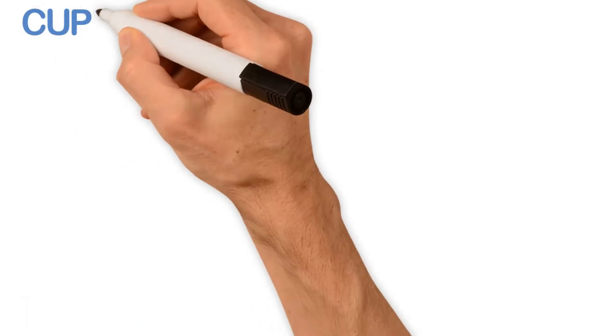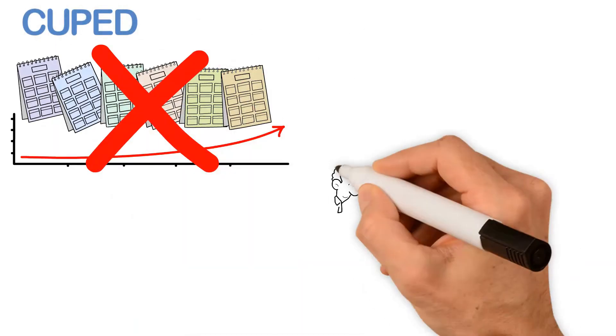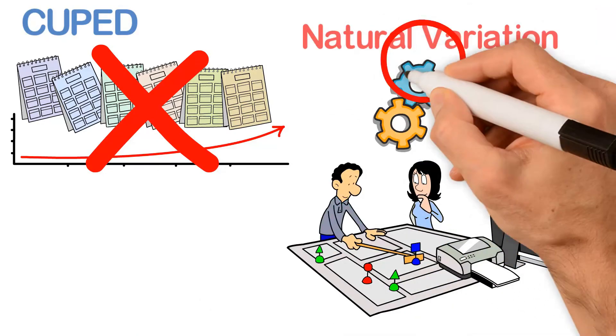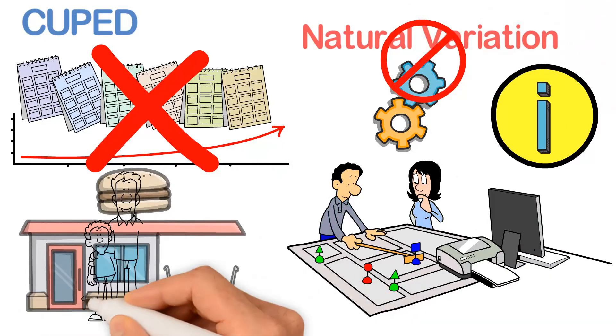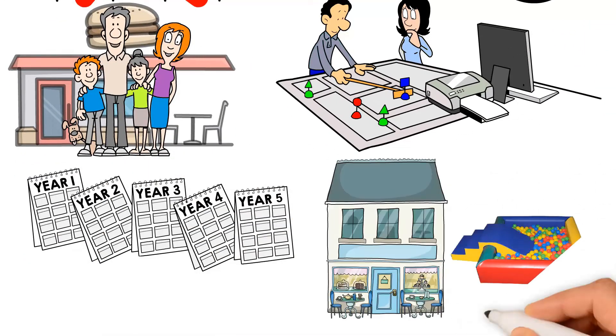Now, a full CUPID approach doesn't just use previous year's sales as a control, it uses all known pre-experiment information, removing natural variation from additional factors such as how many families have visited in the previous year, whether the store has a ball pit, etc.